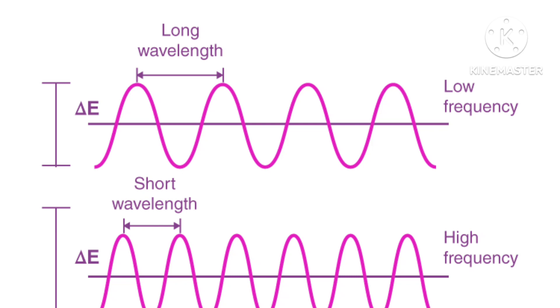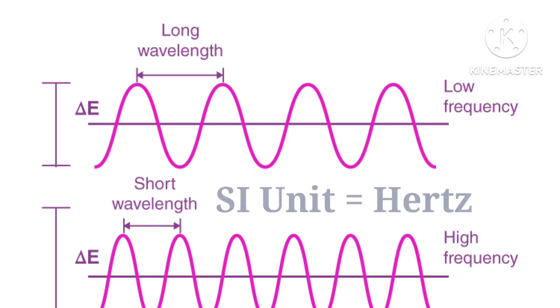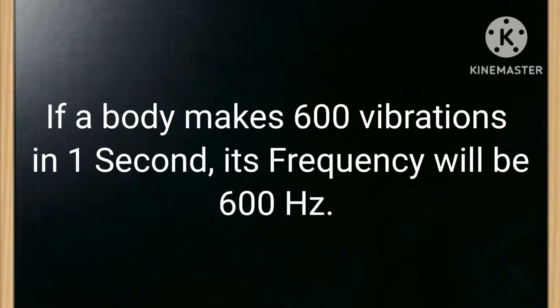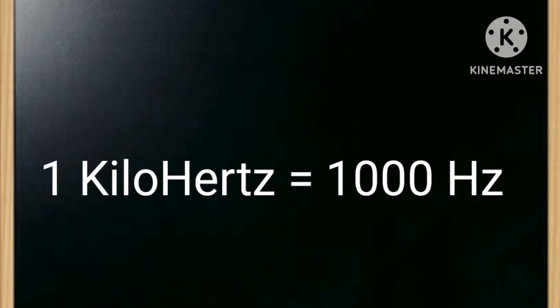The number of vibrations made by a vibrating body in one second is known as its frequency. The SI unit of frequency is hertz. You can understand low frequency and high frequency from the diagram. For example, if a body makes 600 vibrations in one second, its frequency will be 600 hertz. One kilohertz is equal to 1000 hertz.